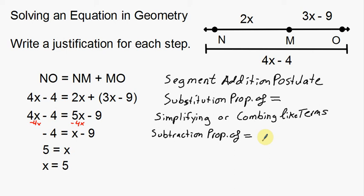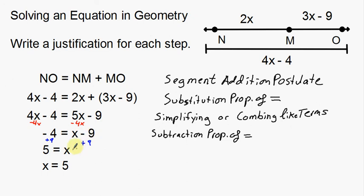The steps that you take give you a big hint on what your property is going to be. Going from line 4 to line 5: the x is still there, but the negative 9 is absent. It looks like we added 9 to both sides — negative 4 and positive 9 create 5. The negative 9 cancels to zero, leaving x. This is the addition property of equality.